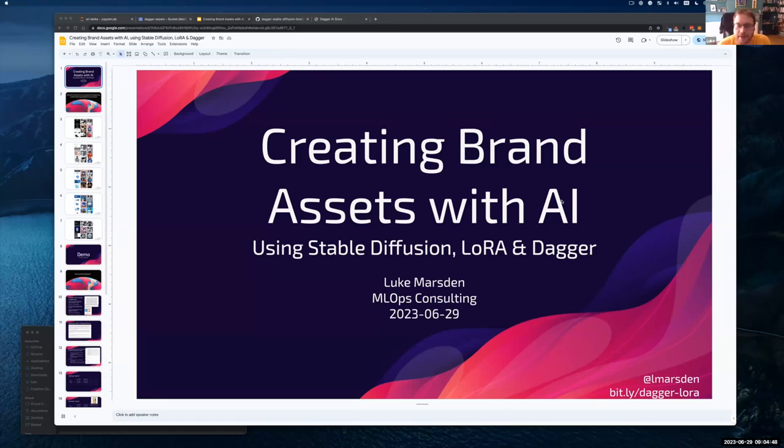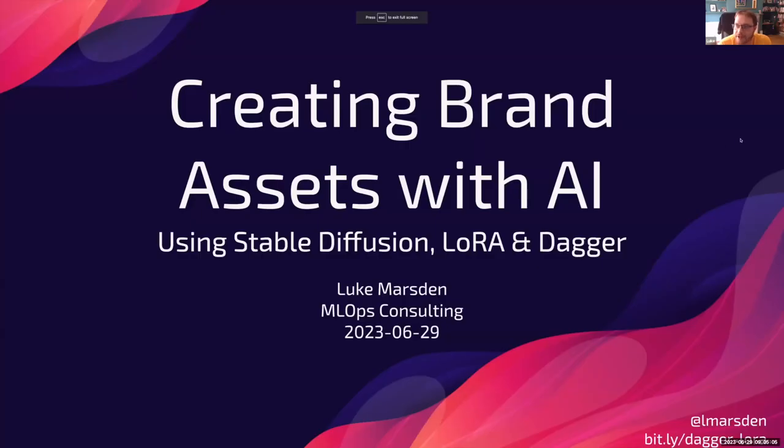I'm going to be talking today about creating brand assets with AI using stable diffusion, low rank adaptation or LoRa and Dagger. So let me just jump in and I'll show you a few slides and then I'm afraid we're going to have a bit of audience participation. So start thinking now about brands that you like and be ready to pop those in the chat in a minute, please.